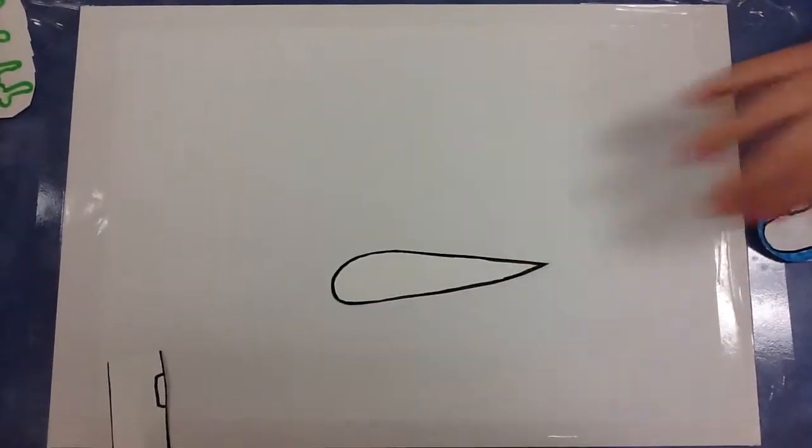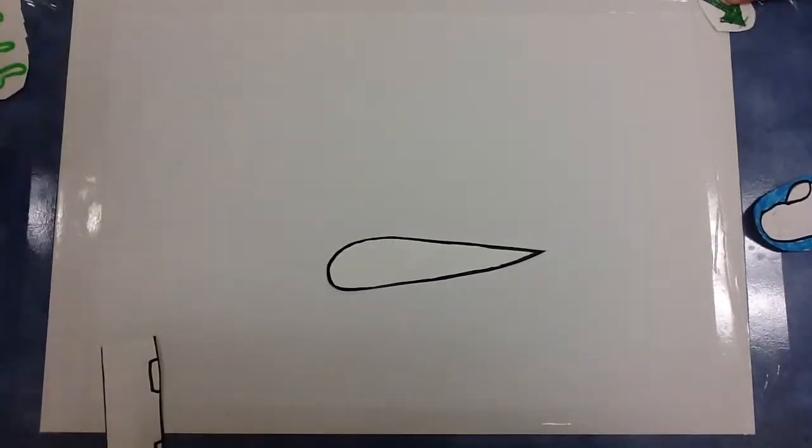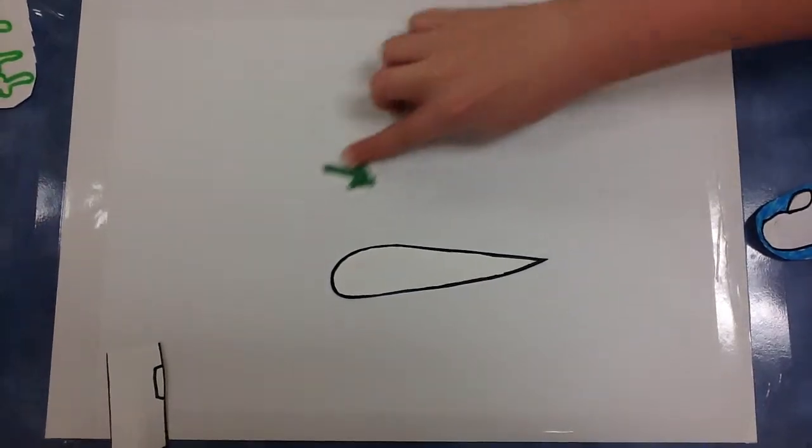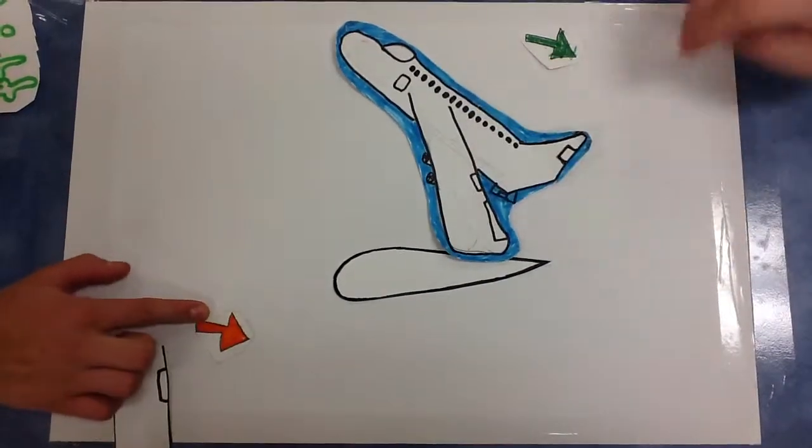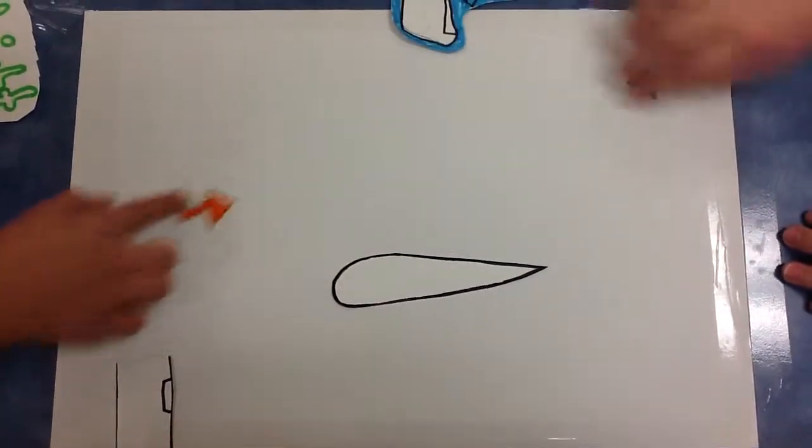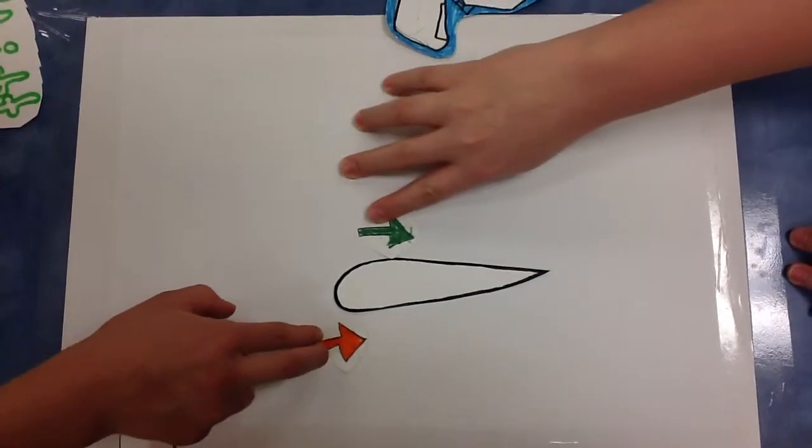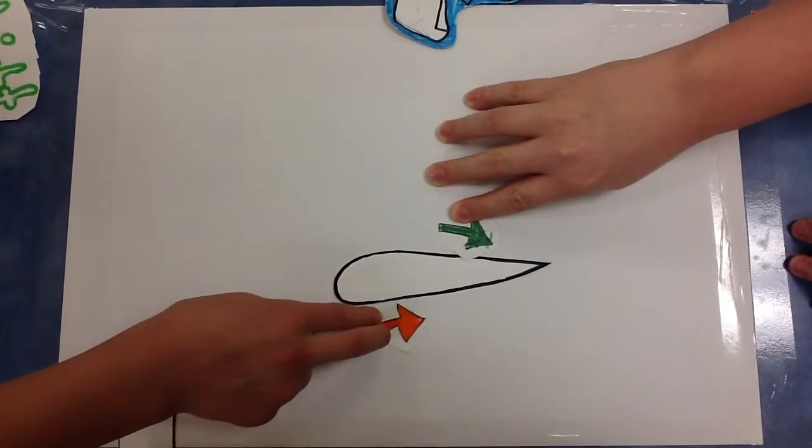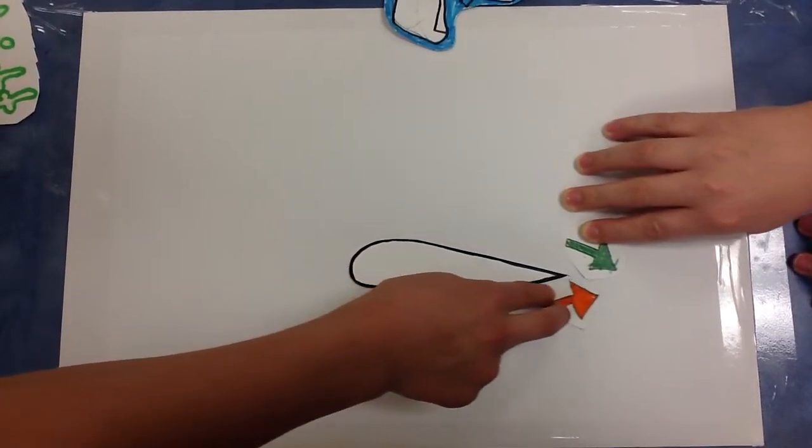The reason the plane even gets off the ground is because of Bernoulli's principle, which is the principle a Swiss guy developed, which means that airplane wings are curved on the top and flat on the bottom. Since the wings are shaped like that, the air has to go faster to get around the top, making a lower pressure, and the air going around the bottom doesn't have to go as fast, making higher pressure.